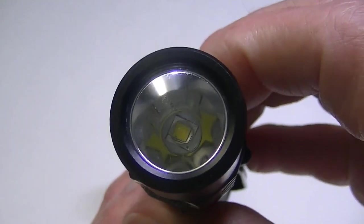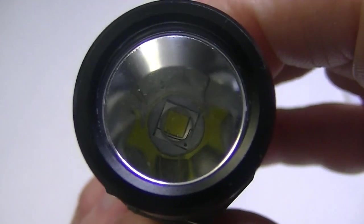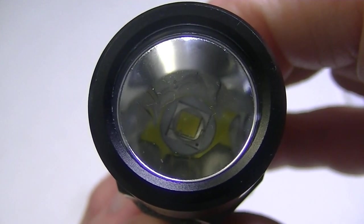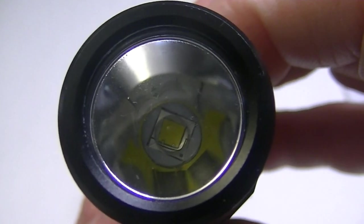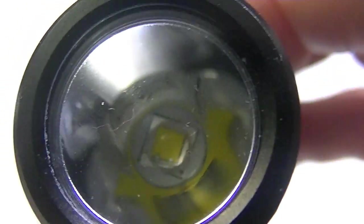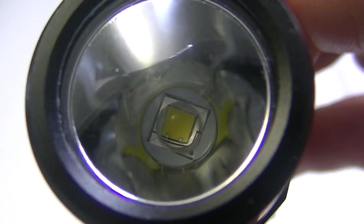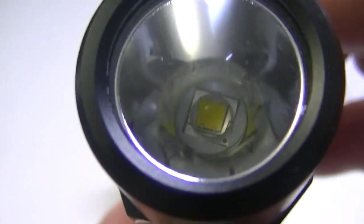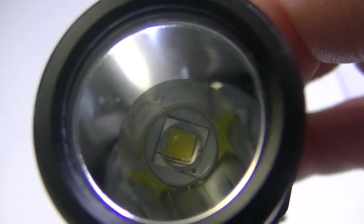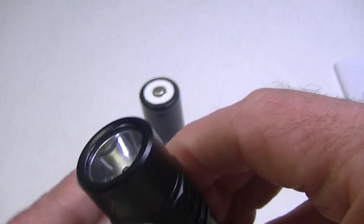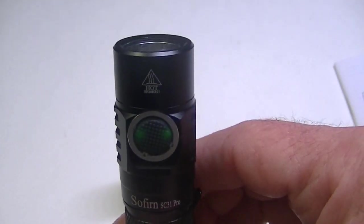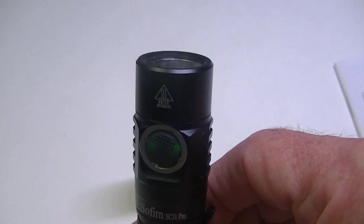So here is the head. By the way, the LED - I haven't mentioned it yet - is a Luminus SST-40, which is a pretty nice LED. That is of course right dead center among the reflector here, which is smooth, no orange peel in there. So you do get a nice beam and I believe the peak beam distance is about 200 meters, so not too bad at all.